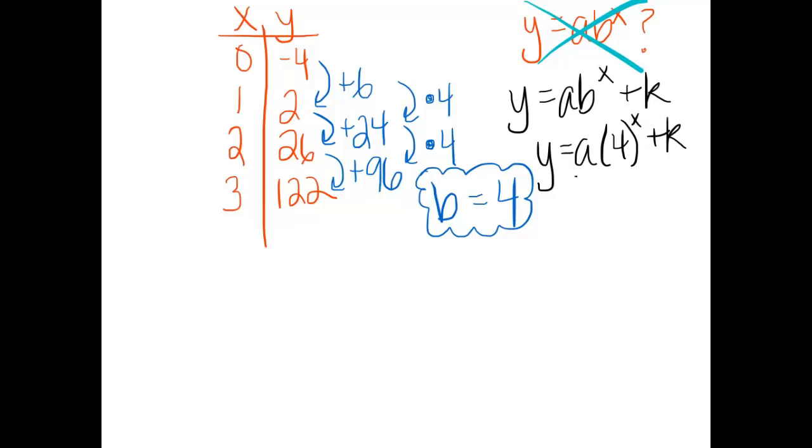And now it's just a matter of solving for a and solving for k. And we can do that by just plugging in what we know and generating a system of equations. Let's plug in the point (0, negative 4) and let's also plug in the point (1, 2). I can simplify these equations to get negative 4 equals a plus k and 2 equals 4a plus k.